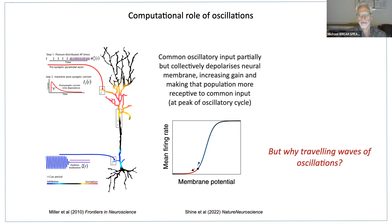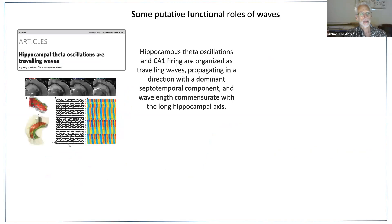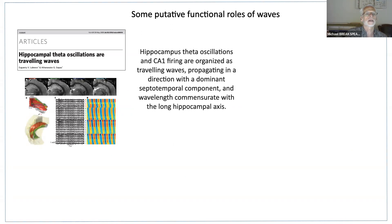Why would these oscillations travel around the brain? We like to think things in the brain are fairly well organized according to principles of segregation and integration, and if we've got waves traveling around, wouldn't conscious experience potentially be quite chaotic? One of the places where waves have been really well elucidated is in the hippocampus, where they seem to travel predominantly in one direction along the long hippocampal axis — the septotemporal component, sometimes called the head and tail, or anterior and posterior — and you get these theta waves beautifully documented in a paper from around 2009.